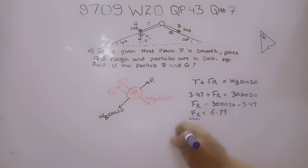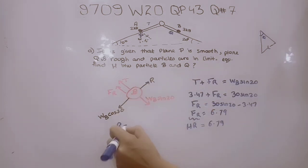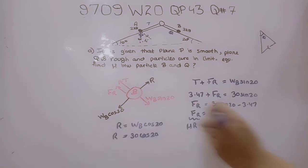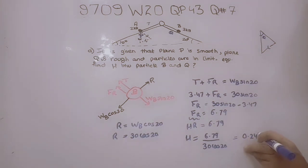Frictional force equals μ times R which equals 6.79, and the reaction force equals WB cos 20, which is 30 cos 20. Therefore, the coefficient of friction μ equals 6.79 divided by 30 cos 20, which equals 0.241. Hence we have calculated the coefficient of friction between particle B and Q.